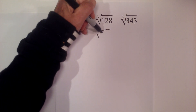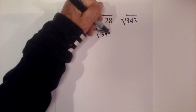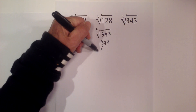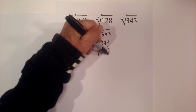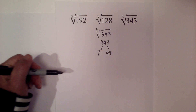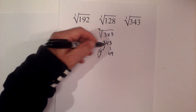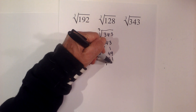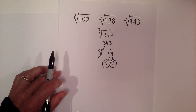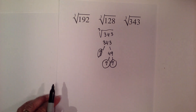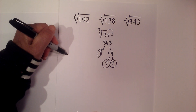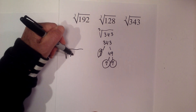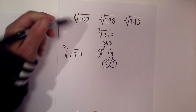So we have the cube root of 343. I'll start with a factor tree of 343. I know that 7 times 49 equals 343. I'll circle the 7 because that is prime. Now I have 7 times 7 is 49. So I have it down to prime numbers. I can rewrite the cube root of 343 with the prime factorization: 7 times 7 times 7.